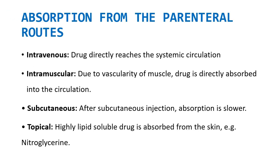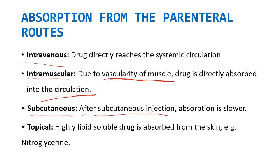Next is absorption from the parenteral routes. Through intravenous administration, the drug directly reaches the systemic circulation and gets absorbed — that is why the IV route is more preferred to deal with emergency conditions. Next is intramuscular — due to the vascularity of the muscle, the drug is directly absorbed into the circulation. Subcutaneous absorption is slower because subcutaneous tissue has limited blood vessels. Through topical routes, highly lipid-soluble drugs are absorbed from the skin — an example is nitroglycerin.